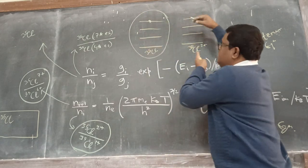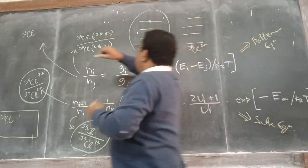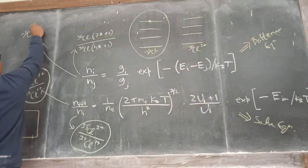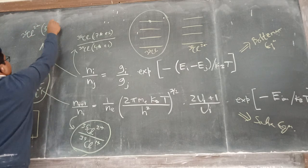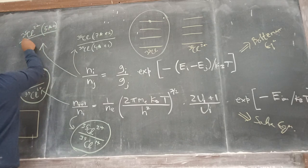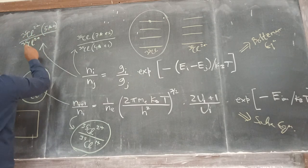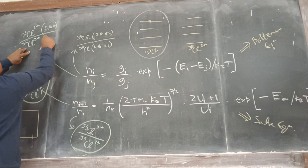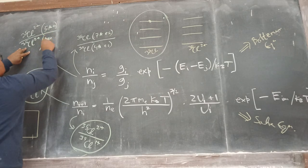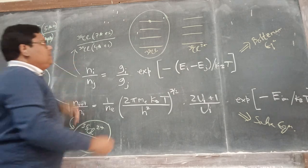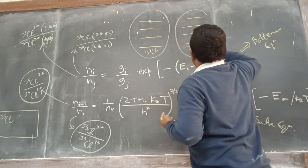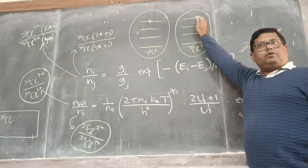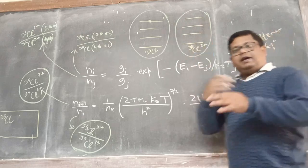Similarly, for a single species like chlorine-35 2+ ions, the Boltzmann equation can tell you how many are in the 5th excited state compared to the 1st excited state or ground state. The moral is: the Boltzmann equation always deals with the same species — comparing populations across energy levels within that one species.